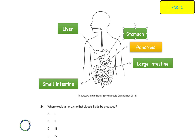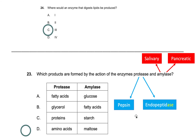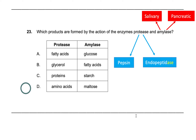Even though both bile and lipase break down fats, only lipase is an enzyme — bile is not. So the answer is C, option three, the pancreas. Option D, the large intestine, is not correct because the large intestine is not involved in digestion at all — digestion stops in the small intestine. Let's move on to the next question: which products are formed by the action of the enzymes protease and amylase?